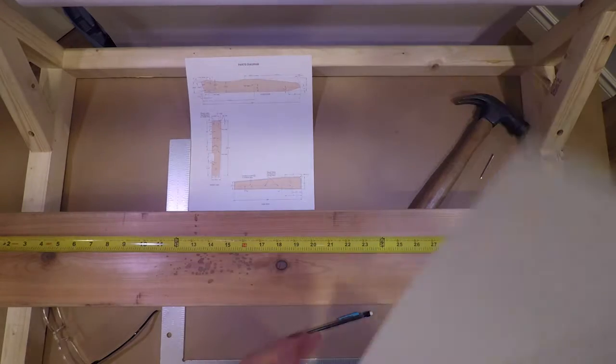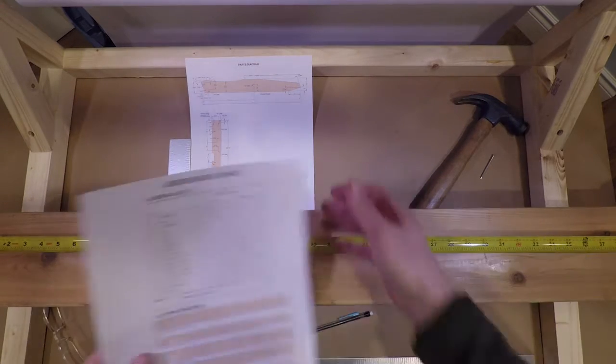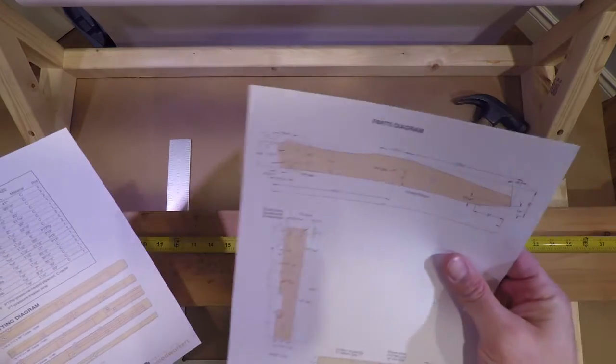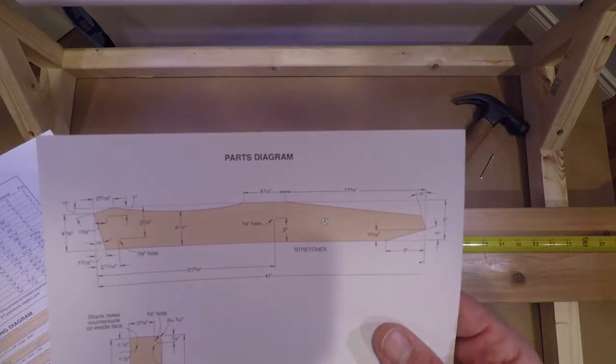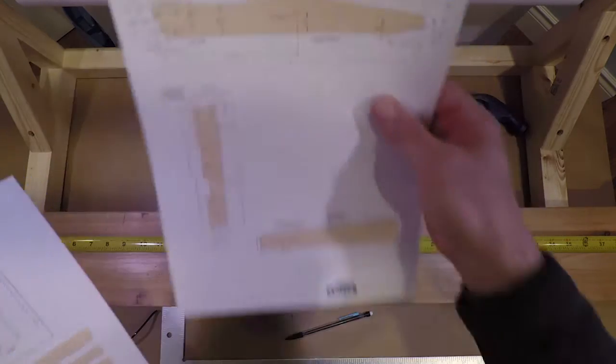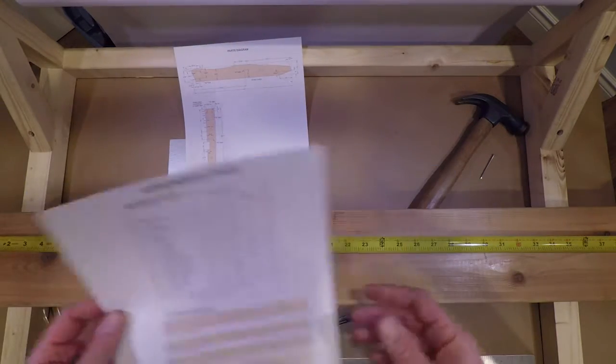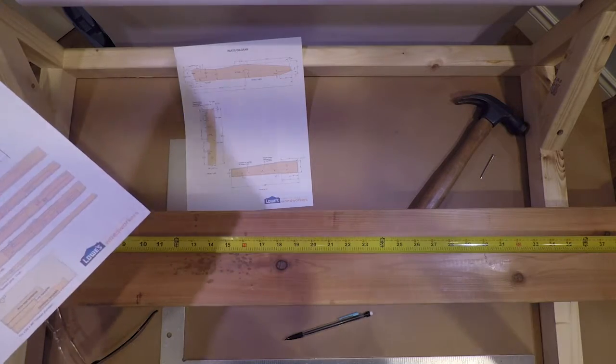Hi, people often ask how do you transfer a template that you see in a plan that's in a magazine or small scale? How do you transfer that drawing without a full-size template to a piece of wood? So I'm going to show you that and hopefully you'll be able to follow along here.